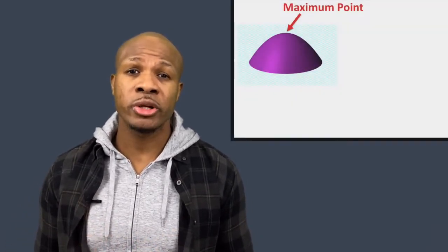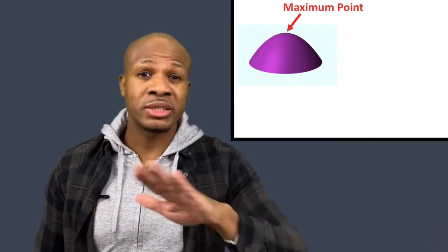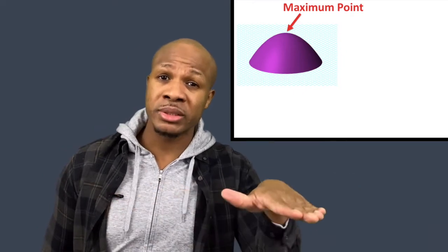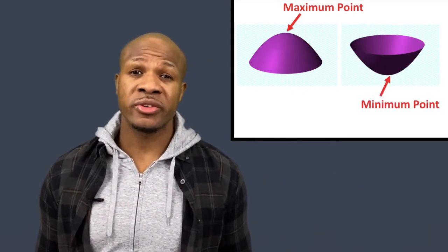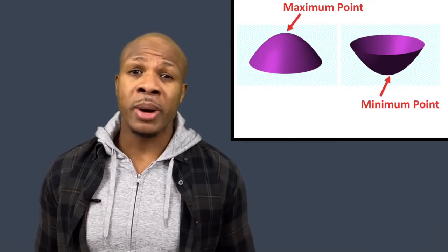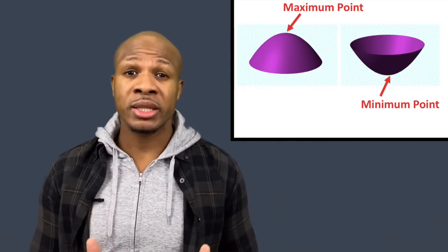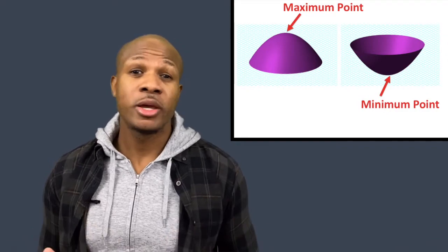A stationary point is a point on a surface where things look relatively flat at that point. For example, a maximum point on a surface is a very common stationary point — the surface flattens out because everywhere else it's sloped upwards, but once you get to the top the slope flattens out. On the other hand, you can have a function shaped like a valley, and at the lowest point in that valley things flatten out as well — that point is called a minimum.